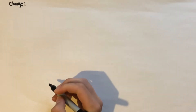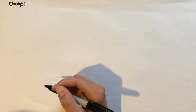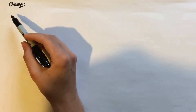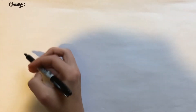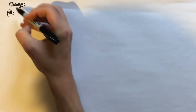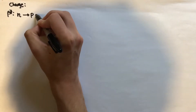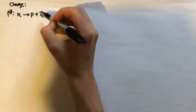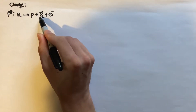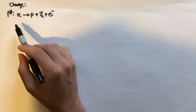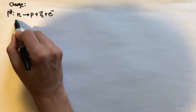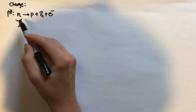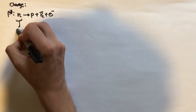Let's start by looking at the conservation of charge. Charge is a quantity that is conserved in all particle reactions, meaning the total charge before the reaction is the same as the total charge after. Let's take the example of beta minus decay. The equation is: a neutron turns into a proton plus an electron plus an anti-electron neutrino. On the left-hand side we only have the neutron, which is neutral, so the total charge is zero.